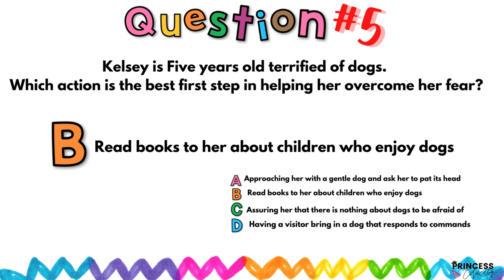One way for kids to learn new material is through books and social interaction. I recommend reading books about dogs — like Clifford — that make the dog seem like a hero, or books about children who love their pet dogs. Read with excitement to the class, especially to that child. Option D — having a visitor bring in a trained dog — is also good, but check your state's requirements regarding animals in the classroom.